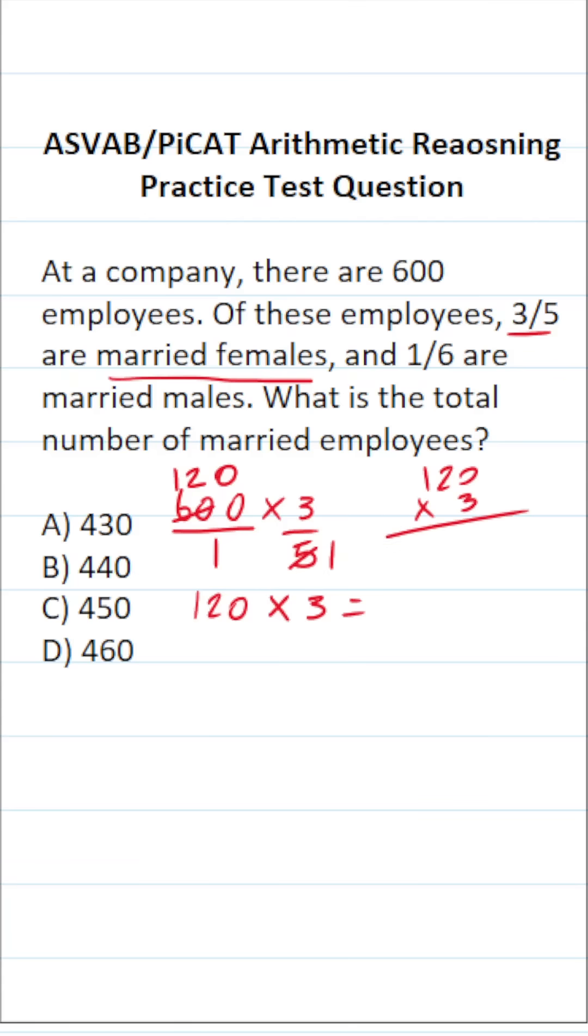What is 120 times 3? 3 times 0 is 0, 2 times 3 is 6, 3 times 1 is 3. So 360 of the 600 employees are married females.